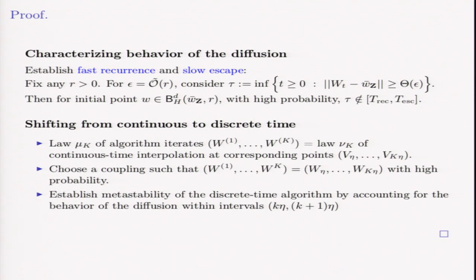The next part is transferring this result from the continuous time setting to the discrete time setting, because obviously our algorithm runs in discrete time. The first step is to note that the algorithm iterates have the same joint distribution as the standard continuous time interpolation at the corresponding sample points. This means that we can bound the total variation distance between these two via Girsanov and by data processing inequality.